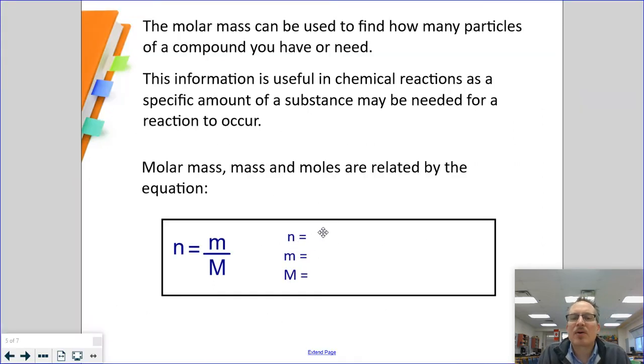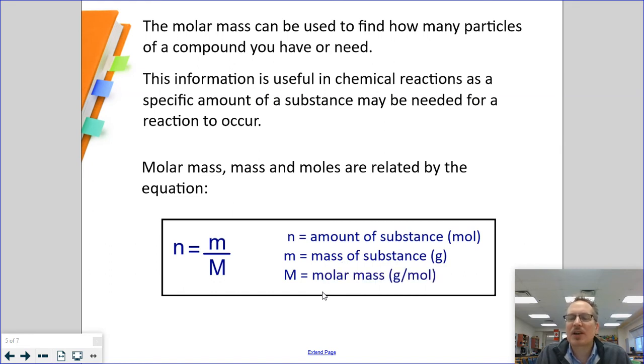I want to remind us that n in chemistry stands for the amount of the substance. That's the chemical amount. We measure it in moles. M stands for mass. That's our value in grams. And lastly, we already know capital M stands for molar mass, and we measure that in grams per mole.